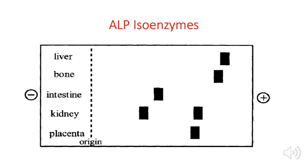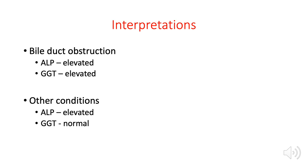ALP can be found in the bile canaliculi, secreted by osteoblasts in bone, and present in the placenta, intestine, and kidney. Since GGT has fewer tissue sources, it is more specific to bile duct obstruction. If both ALP and GGT are elevated, this is highly suggestive of bile duct obstruction. But if ALP is elevated and GGT is normal, the ALP elevation likely comes from other tissue sources — bone, placenta, intestine, or kidney.